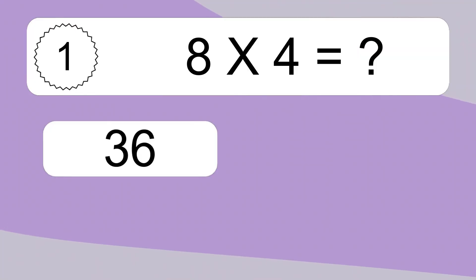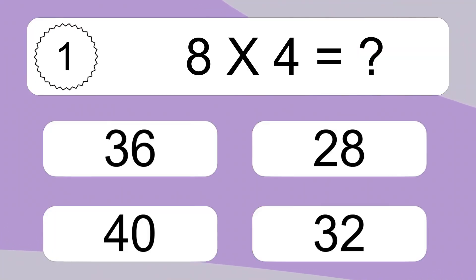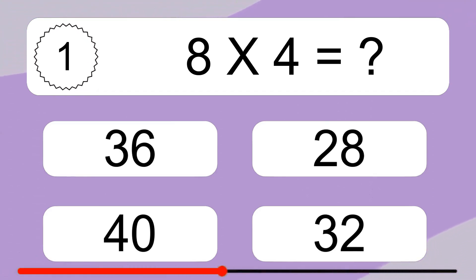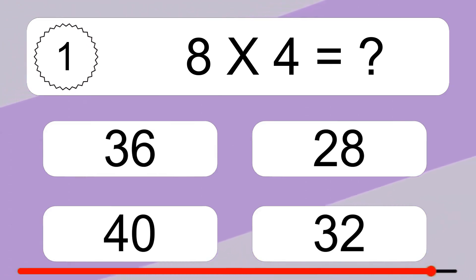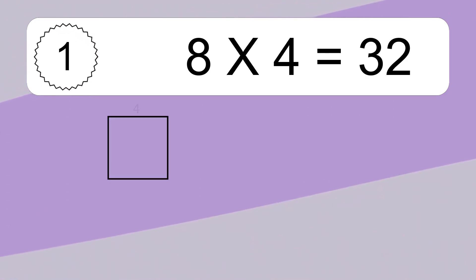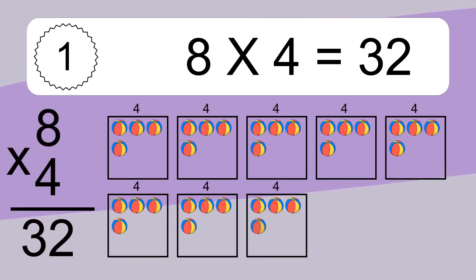8 times 4 equals what? 8 times 4 equals 32.